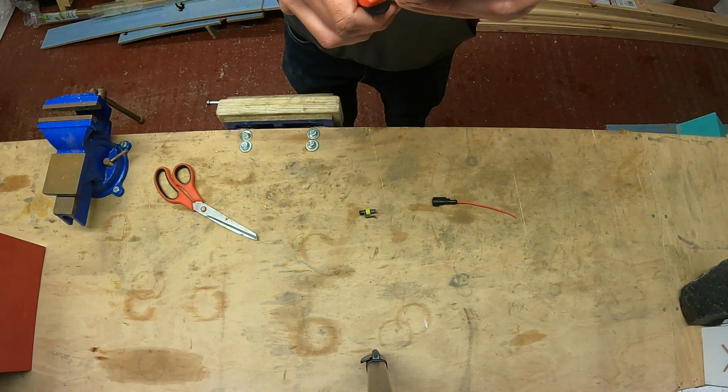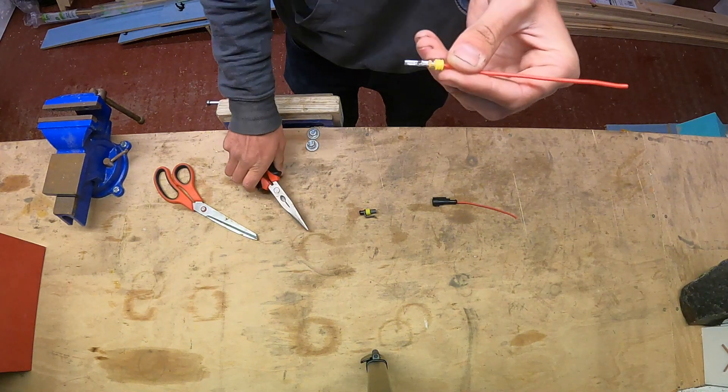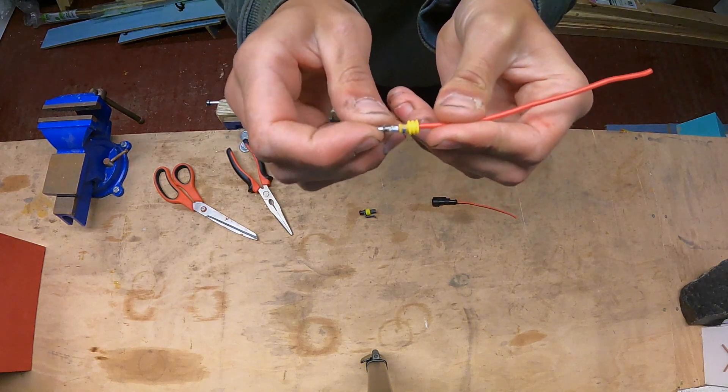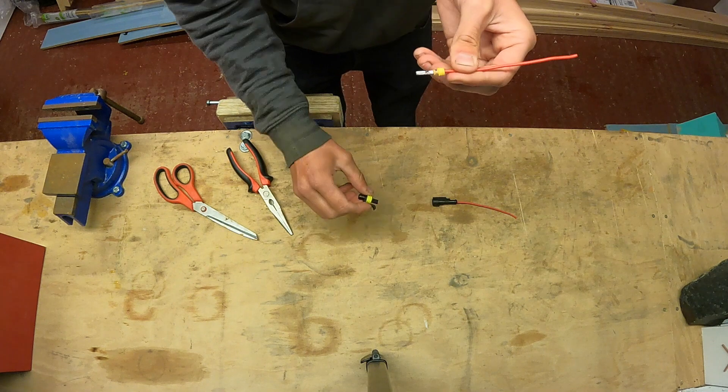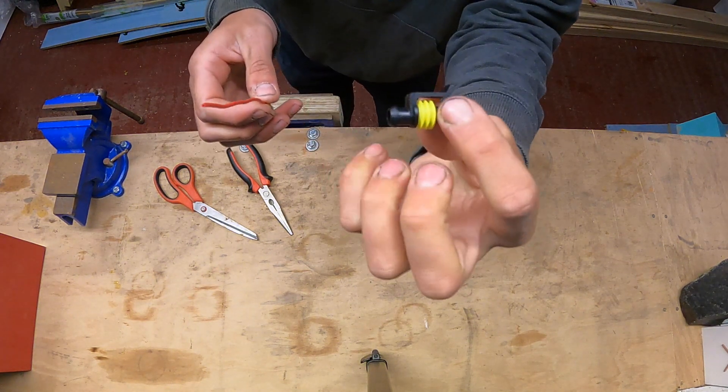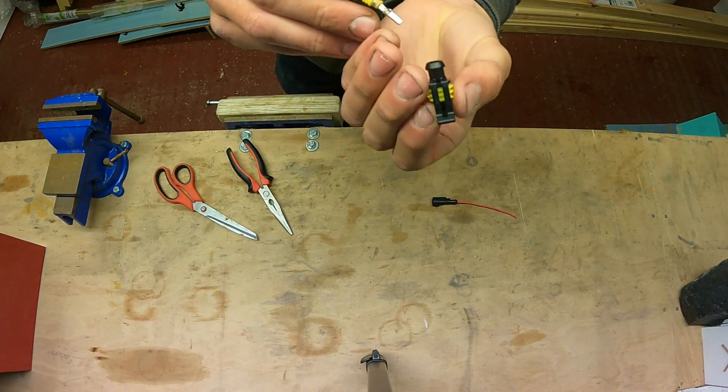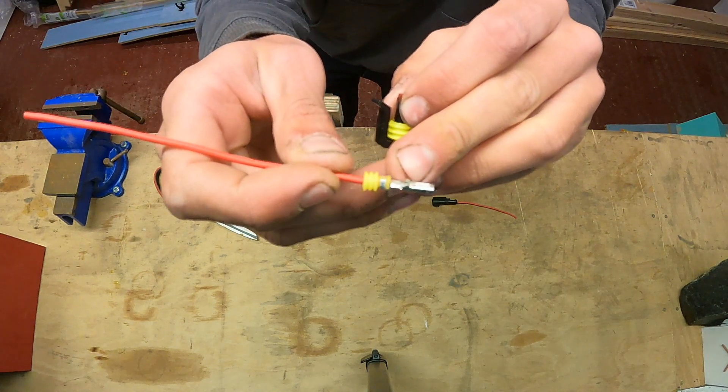Then gently form the longer tabs, the metal tabs, over the yellow seal, the yellow gasket. Don't go too tight with those, but enough just to compress that yellow seal onto the wire. Again, that's a really strong connection there.